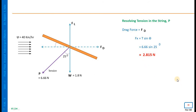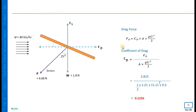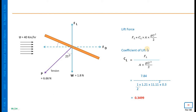Fx comes to 2.815 N, which is nothing but the drag force. Similarly, the vertical component (lift force) = T cos θ + W, which comes to 7.84 N. Once drag force and lift force are known, we can estimate the coefficient of drag. With all parameters known, the coefficient of drag comes to 0.1256. Similarly, the coefficient of lift comes to 0.3499.